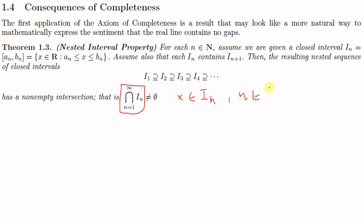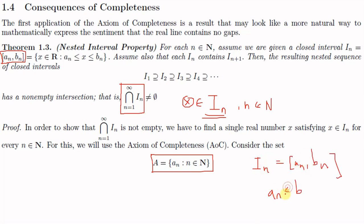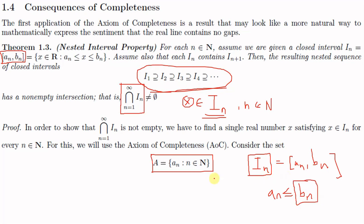For this we define a set A = {a_n : n ∈ ℕ}, which consists of all the left-hand endpoints of the intervals I_n. Since I_n = [a_n, b_n], we know that a_n ≤ b_n for every n. Since all the intervals are nested — I_1 ⊇ I_2 ⊇ I_3 ⊇ ... — we can say that each b_n is an upper bound for the set A. So A is non-empty and bounded above.